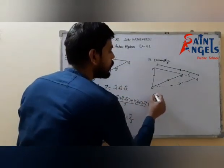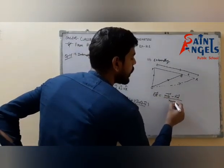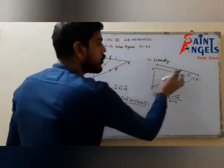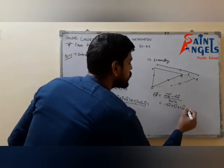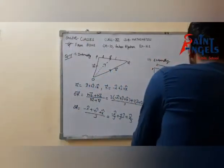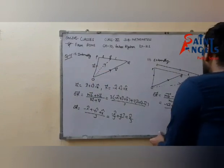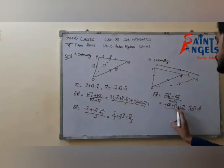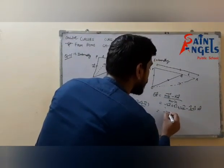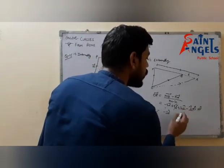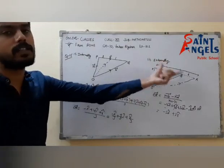For the external division, the formula is (M·vector B minus N·vector A) upon (M minus N). So M times vector B is 2 into (minus I-cap plus J-cap plus K-cap) = minus 2I plus 2J plus 2K. N times vector A is 1 into (I-cap plus 2J-cap minus K-cap). With M minus N = 1 in the denominator, combining gives minus 3I-cap plus 0J-cap plus 3K-cap as the position vector of point R when it divides PQ externally in ratio 2:1.